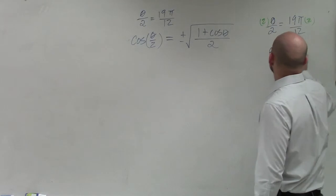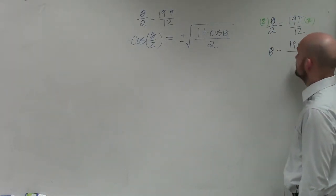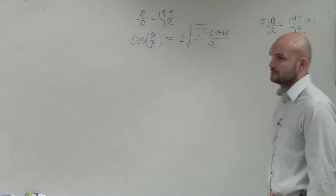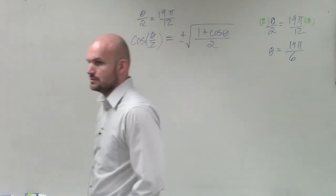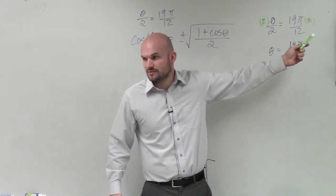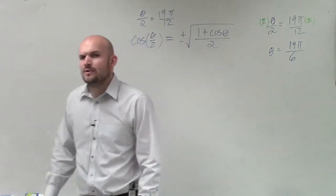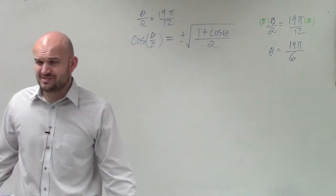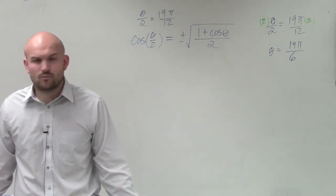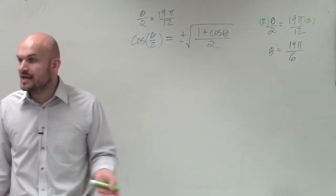And I have theta equals 19π over 2 over 12, which reduces down to 1 sixth, right? One sixth times 19π, so it's 19π over 6. Now, can we evaluate for 19π over 6? Yeah, we can. But do we want to? Where is 19π over 6 on the unit circle? That's a lot of revolutions. So what I can also do is find the coterminal angle.